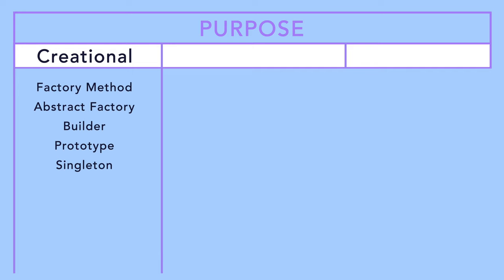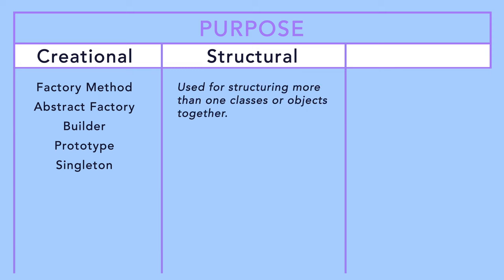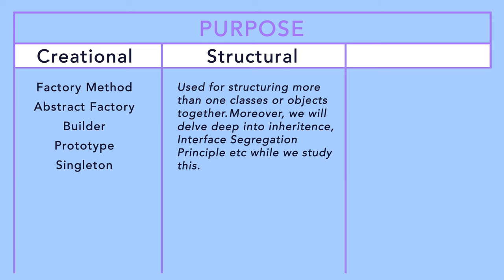The next category is structural, and that is why those are called structural design patterns. When we talk about structure, that means how we are going to structure more than one class and object along with each other. It includes different ways in which we can use inheritance, and it will also touch upon the interface segregation principle — how do we design our interfaces. All those structuring patterns around objects and classes fall under the structural patterns, and the patterns in the structural category are shown here.